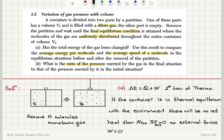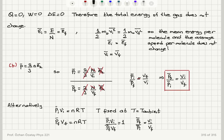Has the total energy changed in this process? Because there is no heat flow from the environment — the container is in thermal equilibrium with the environment including the gas inside — there is no heat flow. Since we're not applying any external forces on the gas molecules, there is no work done on the gas. So the energy of the gas does not change. The mean energy per molecule is E/N, which does not change, and one-half m₀ v² bar also does not change, so the average speed per molecule is the same.